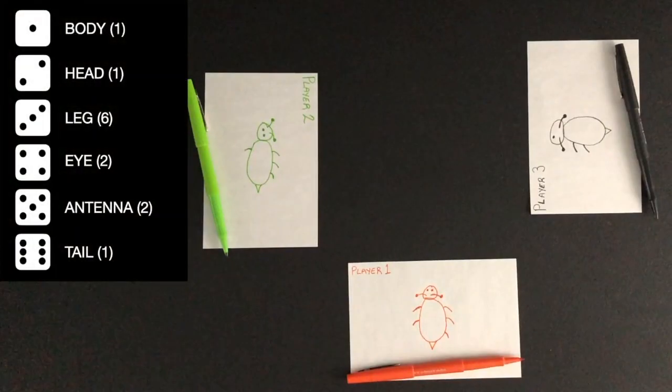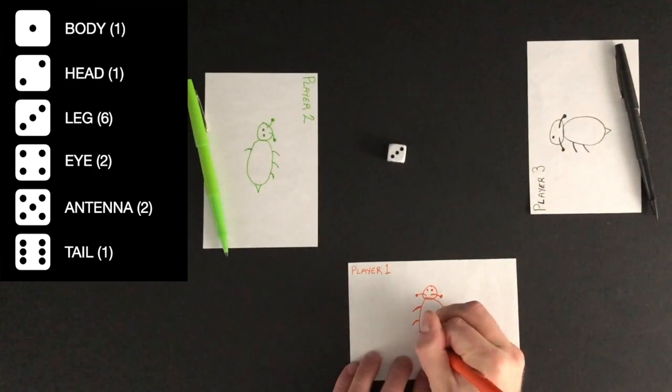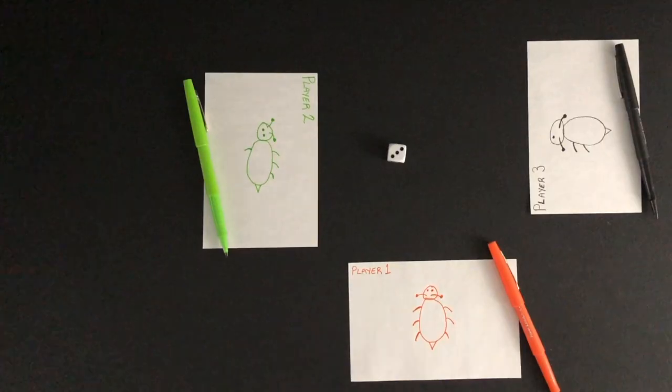The first player to draw a completed beetle wins the game. Player 1 rolls a 3 and draws the last leg needed for a completed beetle to win this game.